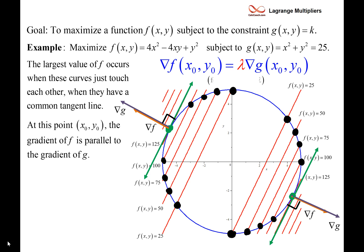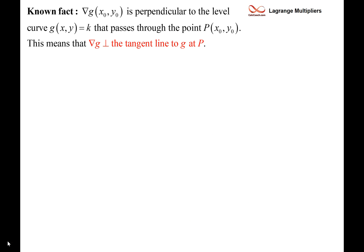When two vectors are scalar multiples of each other, we can say that one is some scalar times the other. The gradient of f is equal to lambda times the gradient of g. Lambda is our scalar — a real number that says how these gradients are related to each other. We know that the gradient of g is perpendicular to the level curve, the blue x squared plus y squared equals 25, and it also passes through our point x naught, y naught that we're looking for. This means the gradient of g is perpendicular to the tangent line to g at our point.